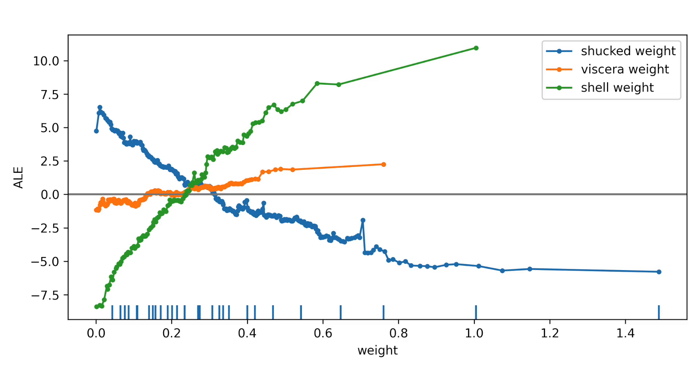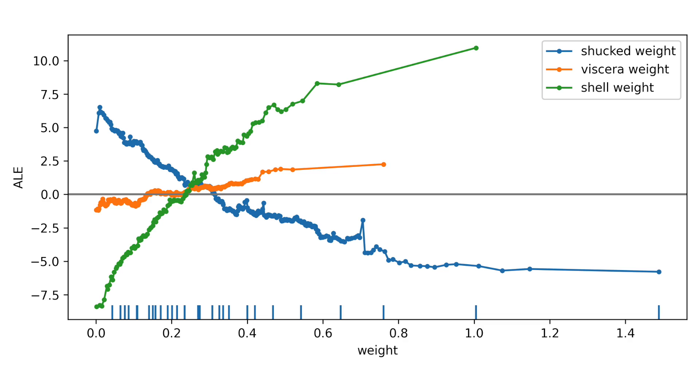You may also notice that we have variable interval lengths. This has to do with the way the package selects intervals. By default, it will select intervals so that at least four instances are included. This is why we see a relatively large distance between the second last and last points in the ALEs. Our dataset becomes sparse for these weight values, and we need larger intervals to capture at least four instances.